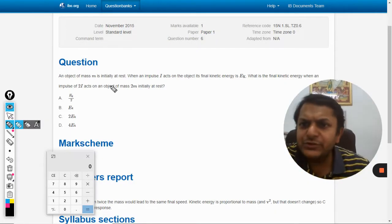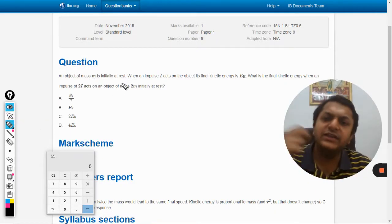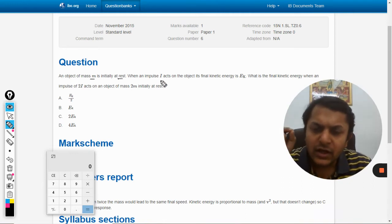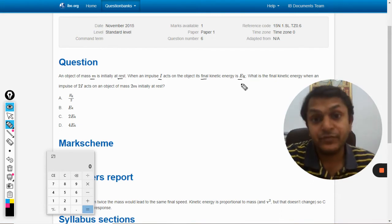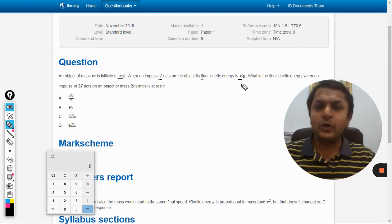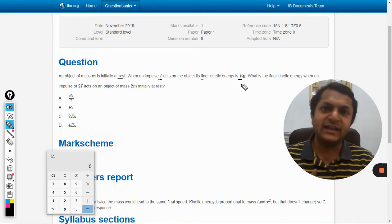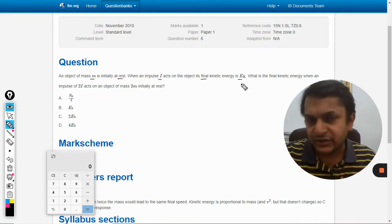An object of mass m is initially at rest. When an impulse i acts on the object, its final kinetic energy becomes ek. This is the question which wants you to relate the impulse with the kinetic energy.